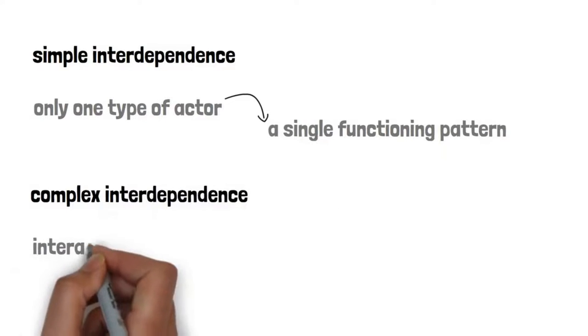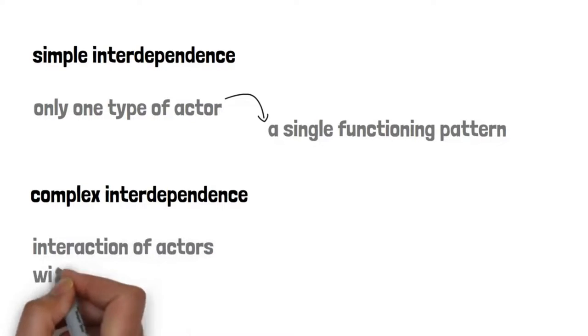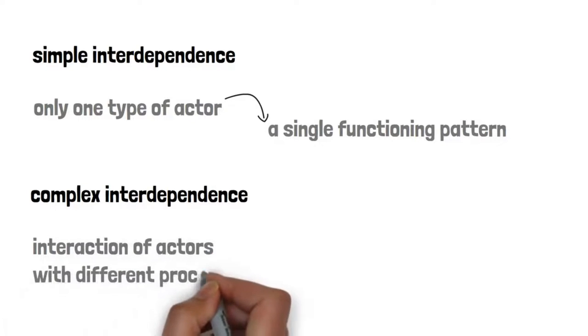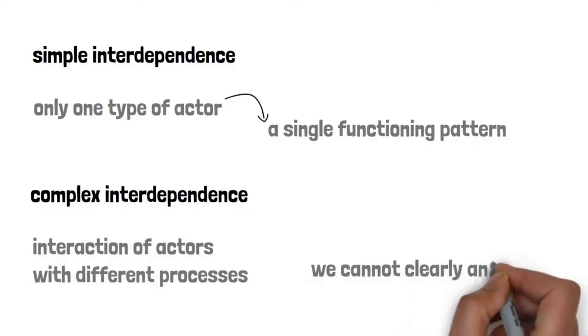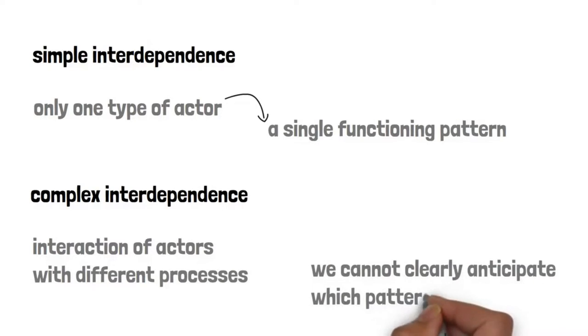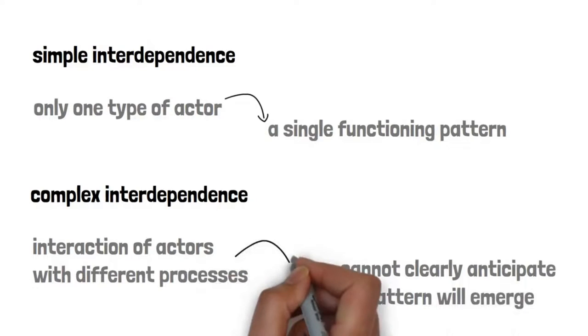On the other hand, by having the interaction of actors with different processes, we have a complex interdependence. This means that, unlike anarchy, which is a process of simple interdependence where a single clear, repeatable pattern of behavior emerges, in complex interdependence we cannot clearly anticipate which pattern will emerge from the interaction between those forces.